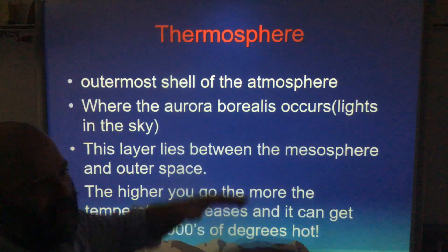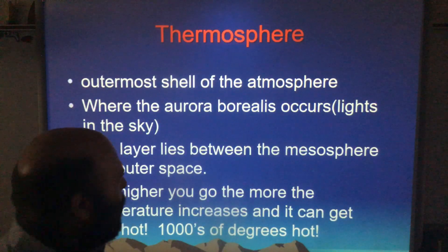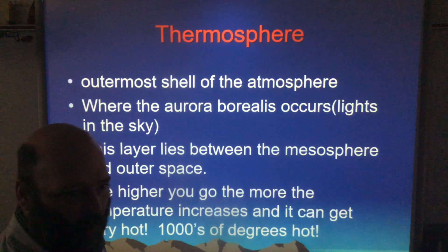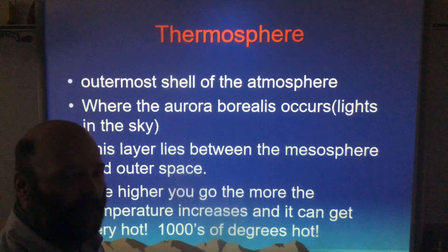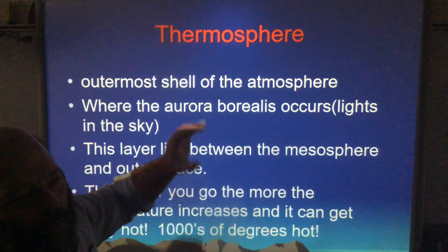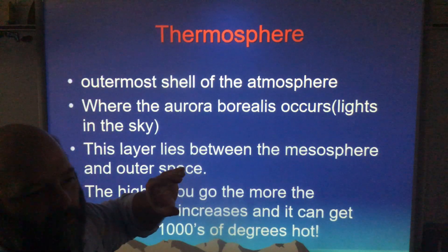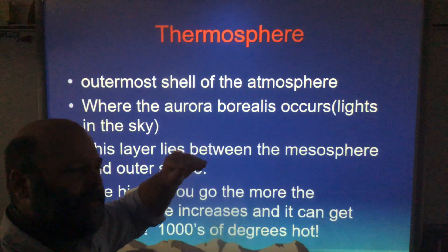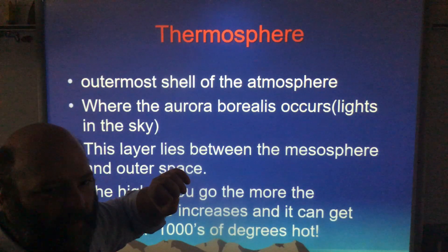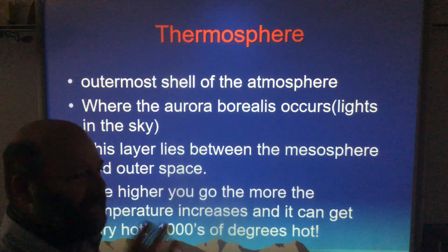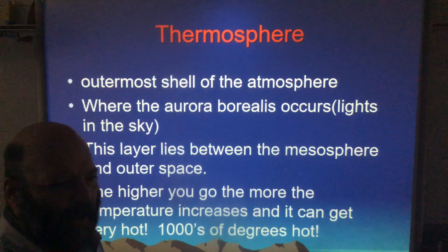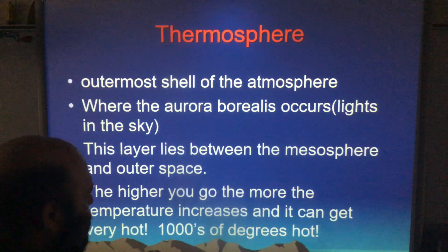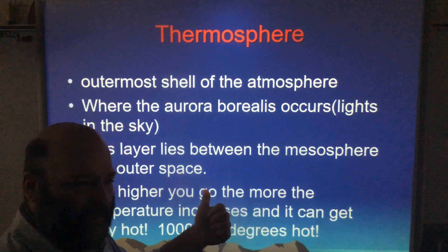That next layer is the thermosphere — this is the outer shell of our atmosphere. This is where the aurora borealis occurs. We don't generally see the aurora down here; it typically happens at the North Pole and South Pole. There are instances where it happens in Alaska, Canada, and even upstate New York, but that's rare. The aurora borealis is basically the sun having a reaction with our atmosphere, causing these really beautiful lights.